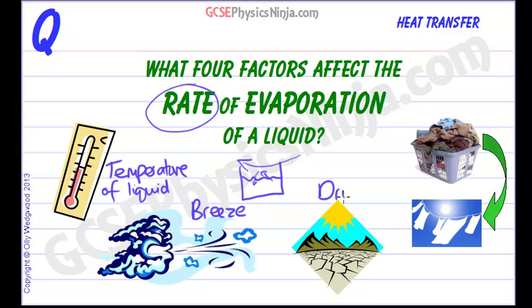The dryness of the air is also important. If you try to dry some washing in a very humid country, it will take a long time because there is water vapour in the air which may end up going onto your washing — that's called condensing, becoming a liquid — and that won't dry your washing. So dryness is a big factor, and you can make evaporation happen much quicker in a dry environment.